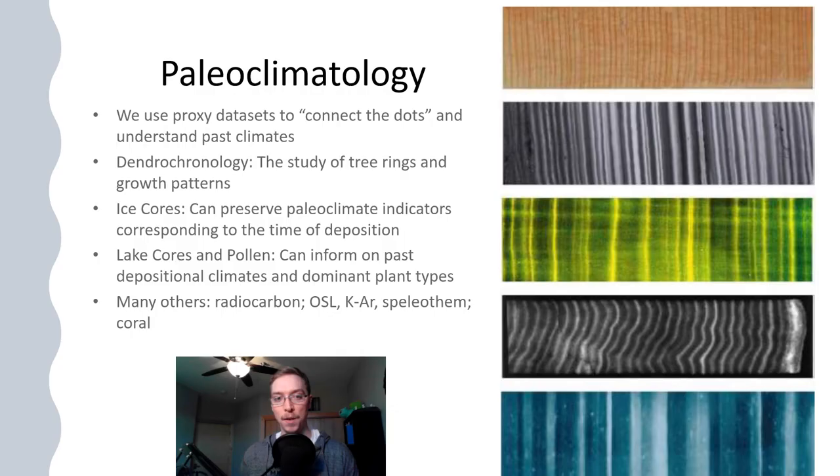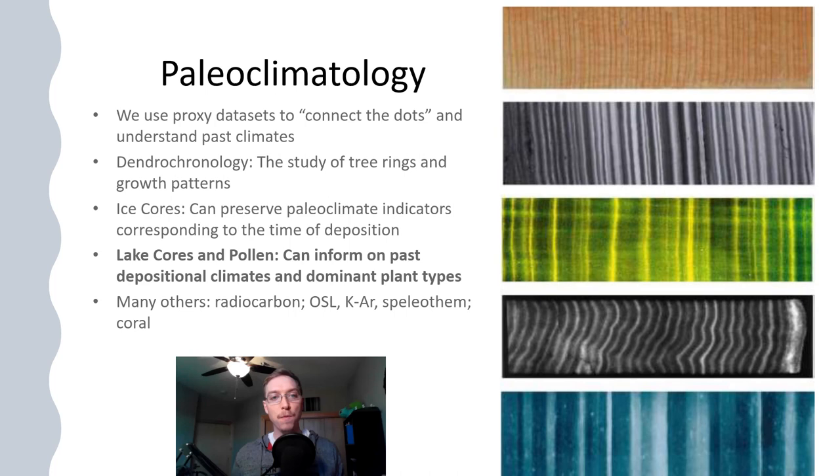Lake cores and pollen allow us to inform on past depositional climates and dominant plant types. And why is that important? Because it can tell us what type of plants existed at a certain place at a given time in a different region, and depositional climates tell us how much water is available to do geomorphic work. If we know how much water is rushing across the surface that can inform on things like precipitation, and if we know how much precipitation there was we can make inferences on what the climate was like at the time.